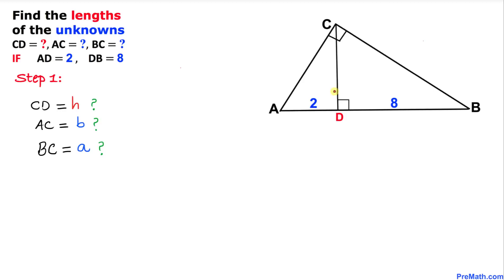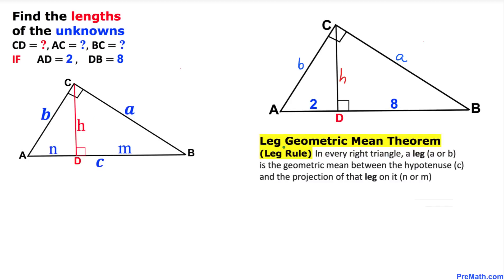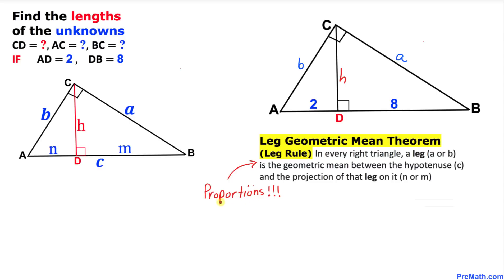Let's call this altitude CD the name H, leg AC lowercase b, and leg BC lowercase a. Now let's talk about the leg geometric mean theorem, or just the leg rule. In this leg rule, every leg in a right triangle — either a or b — is the geometric mean between the hypotenuse C and the projection of that leg onto it, either M or N. In other words, we will be finding proportions.